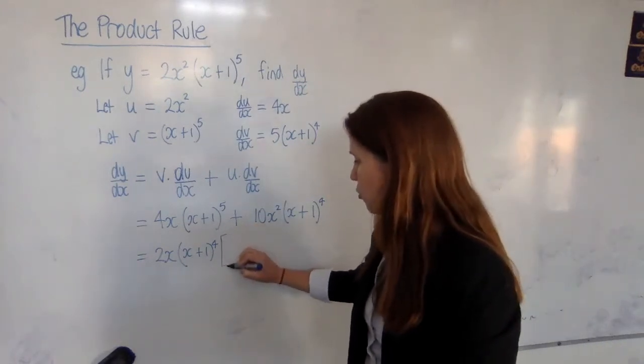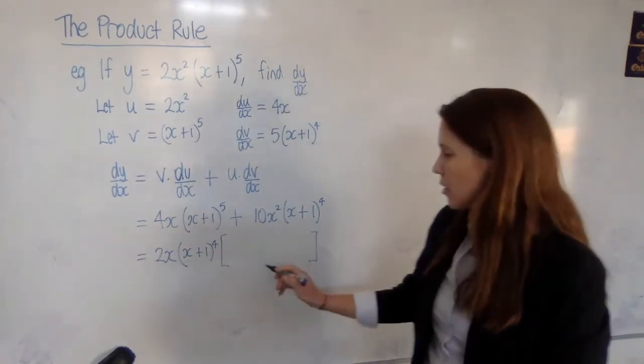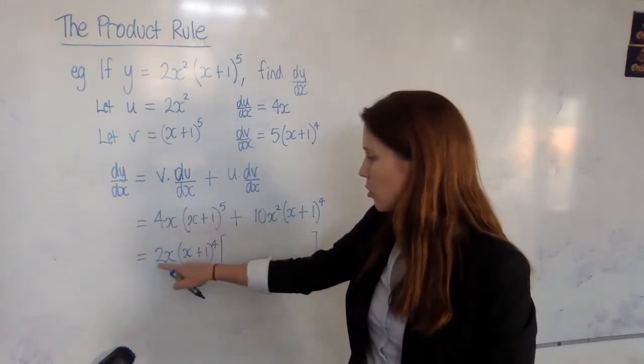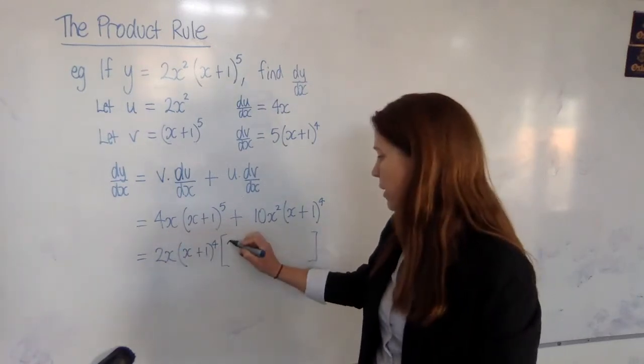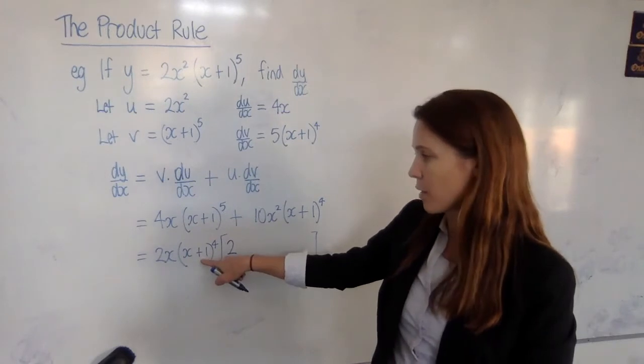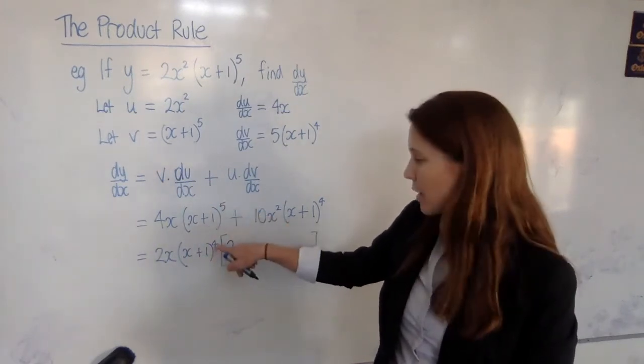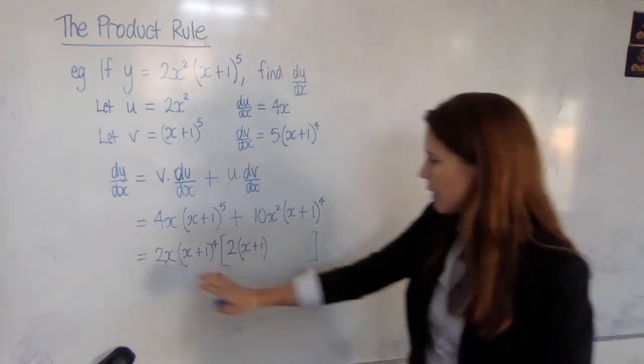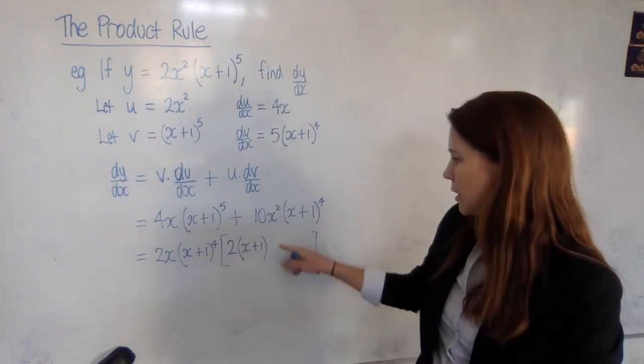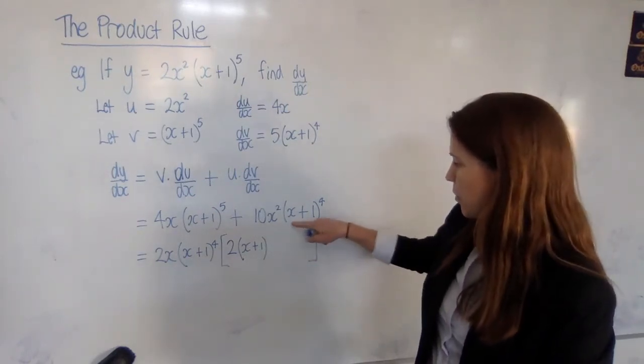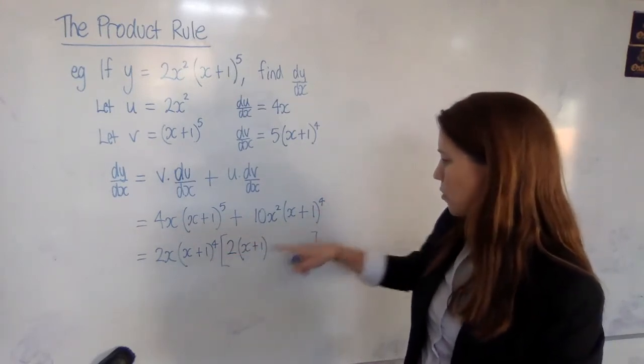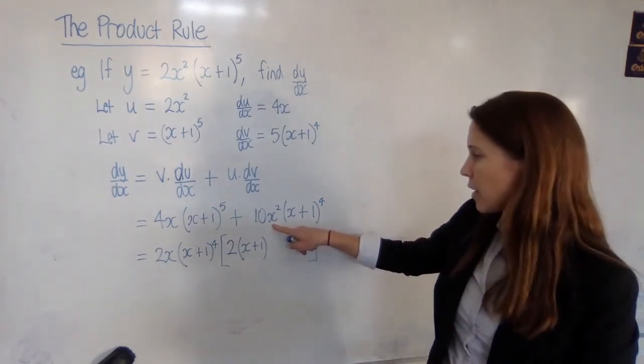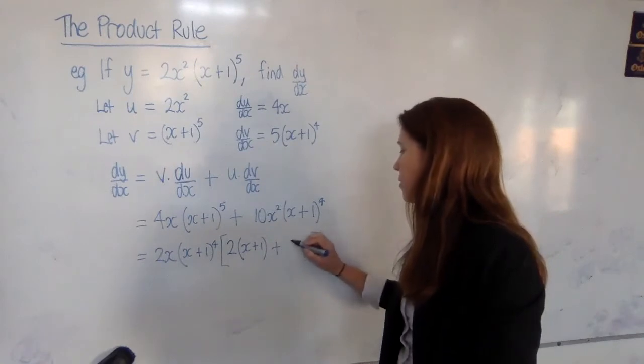Okay. Now I need to draw brackets, and if it helps you to draw big brackets here and think about what goes inside, you need to think, this times something needs to give me this whole first term. Now 2x times 2 will give me the 4x, so I know I need a 2, and I need another (x+1). Don't I have to get (x+1)^5, because out the front, we only have it to the power of 4. So I need two lots of (x+1). And this whole term multiplied by something needs to give me this whole term. I've got the right number of (x+1)s, but here 2x times something needs to give me this 10x². So clearly I need a 5x there. So that's plus 5x.